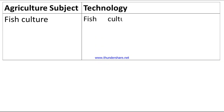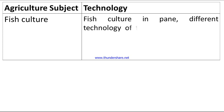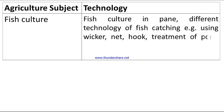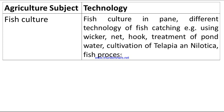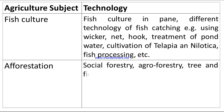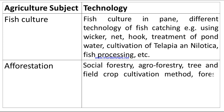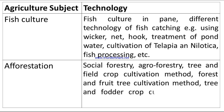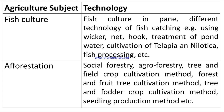Fish culture technologies include: fish culture in pens, different technologies of fish catching such as grassia and using wicker nets and hooks, treatment of pond water, cultivation of tilapia and nylotika, fish processing, etc. Afforestation technologies include: social forestry, agroforestry, tree and field crop cultivation methods, forest and fruit tree cultivation methods, tree and fodder crop cultivation methods, and seedling production methods, etc.